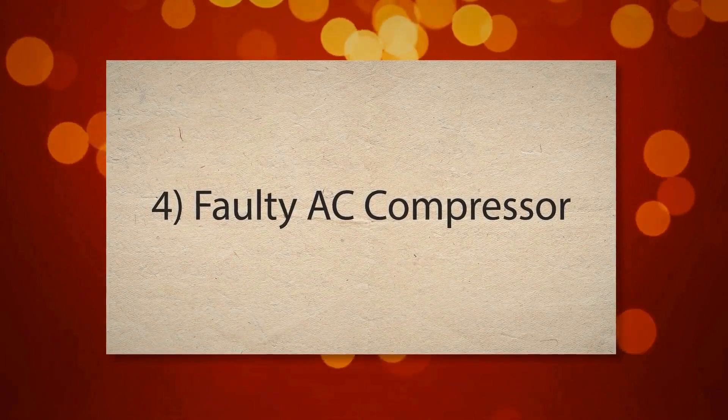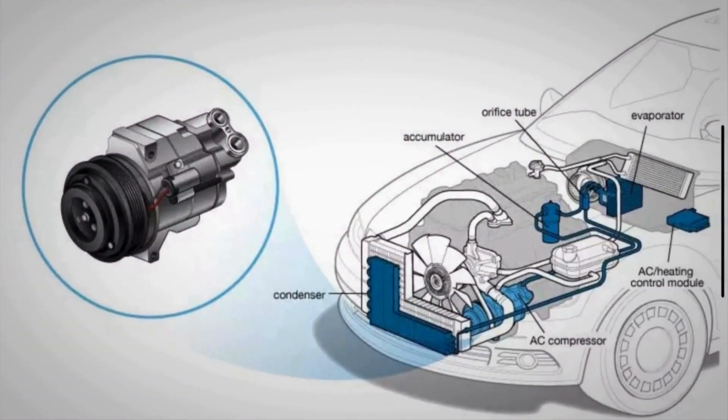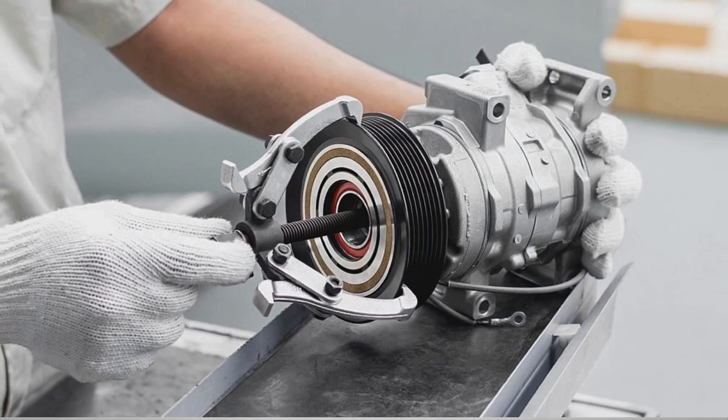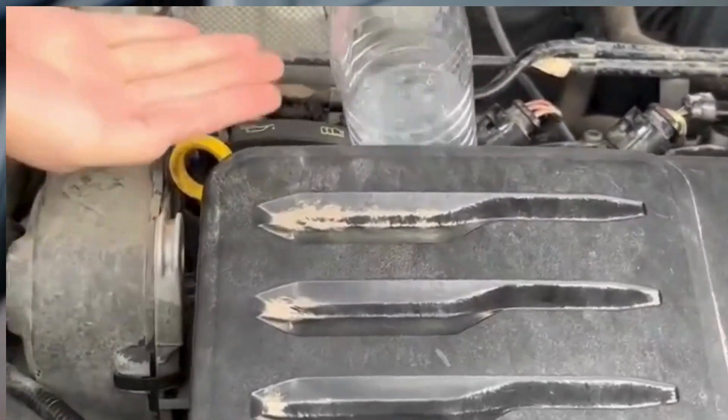4. Faulty AC Compressor. The AC compressor is a mechanical component that can develop internal faults or fail over time. A malfunctioning compressor can create excessive drag on the engine, which may lead to vibrations and shaking when the AC is turned on.